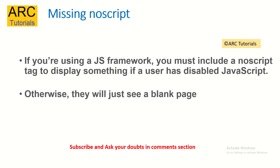The next one is, if you are using a JavaScript framework, you must include a noscript tag to display something if a user has disabled JavaScript. This is purely a check to make sure that the end user's browser has JavaScript enabled. If it is not, give a message saying that JavaScript is disabled, please enable it. Otherwise, the users would just see a blank page and that's not really a good experience. So the golden rule is whenever you're using a JS framework, always include a noscript so that if JavaScript is disabled at the client's end, they would at least see a proper message.